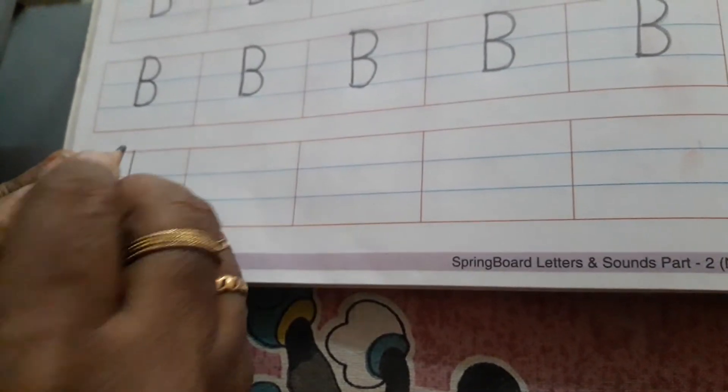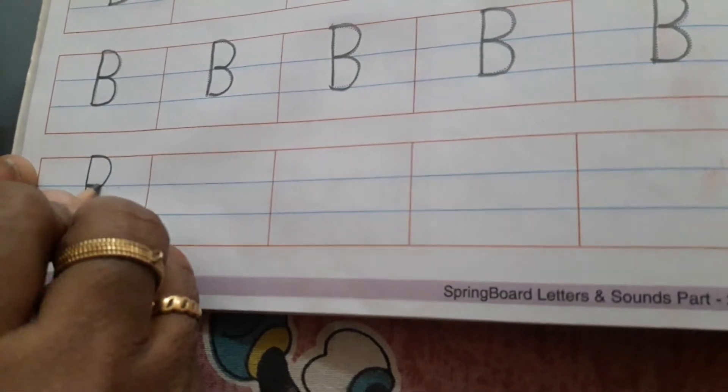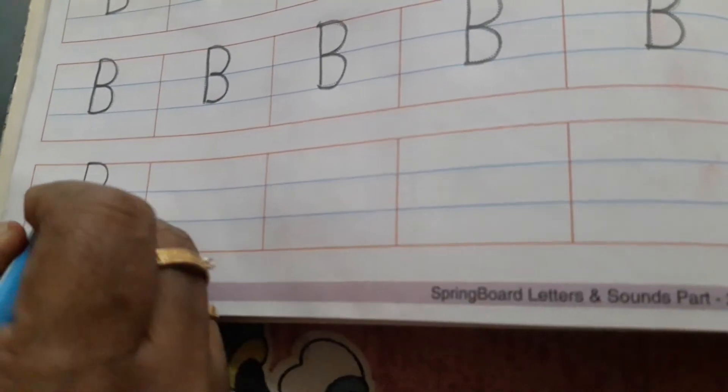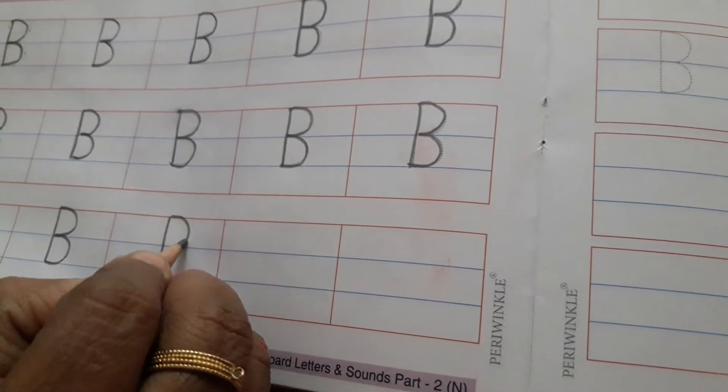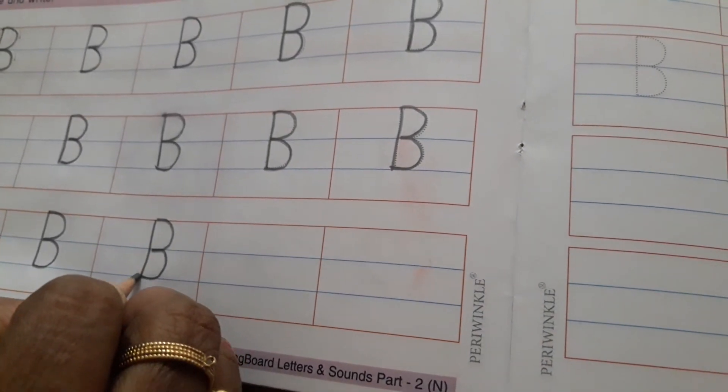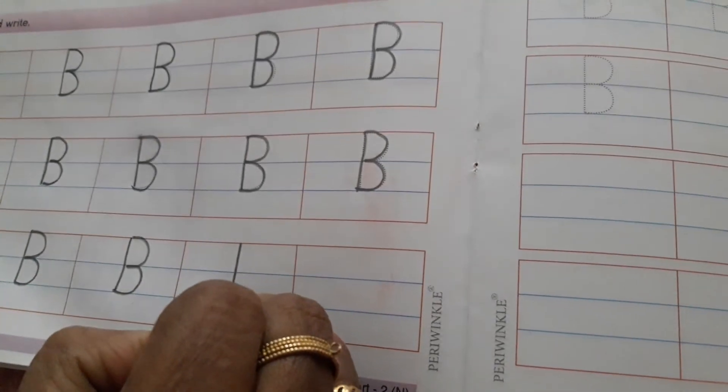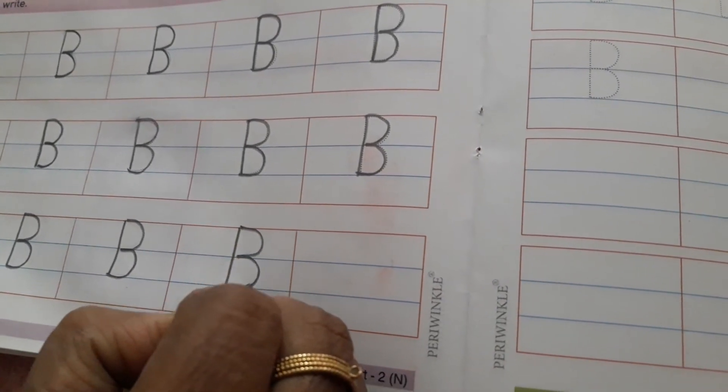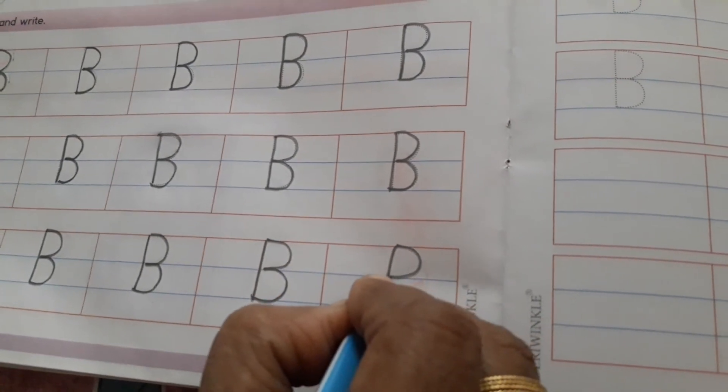Now below there is no tracing given, so we have to write on our own. First: Standing Line from Red Line to Blue Line, then one Curve Line, then the second Curve Line. This completes our letter B. You have to do this sitting at home. Our next video will be on Tracing Letter B. Okay, Bye Bye.